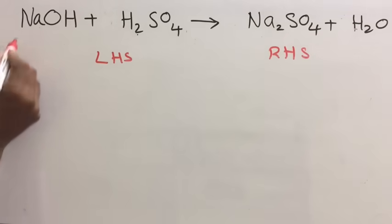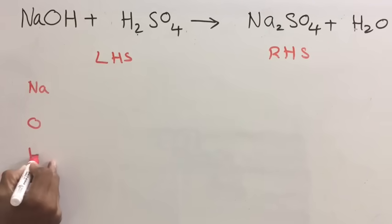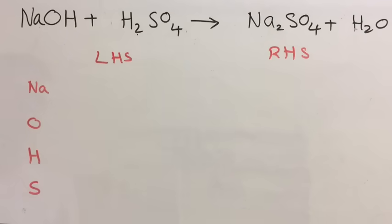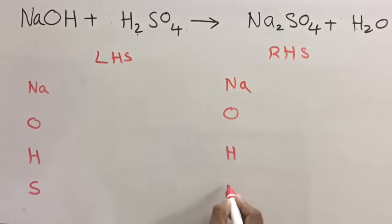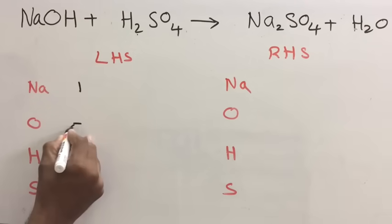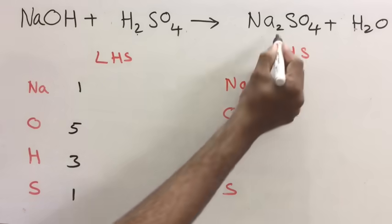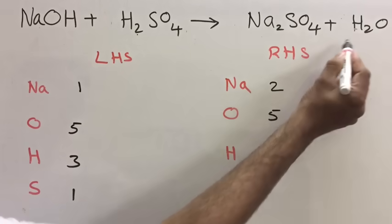One more equation. On LHS you have sodium, oxygen, hydrogen, and sulfur. The same elements are present on the RHS: Na, O, H, and S. Number of atoms: sodium one, oxygen one here and four here — five total; hydrogen one here and two here — three total; sulfur one. On RHS: sodium two, oxygen four and one — five; hydrogen two; sulfur one.